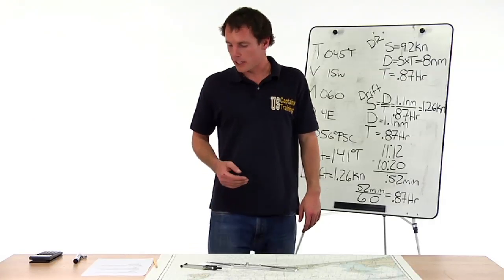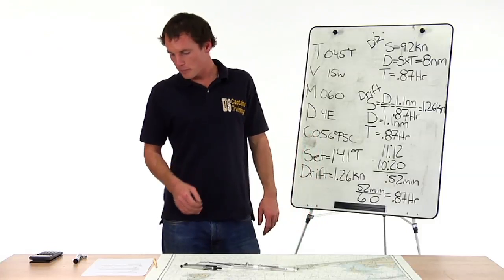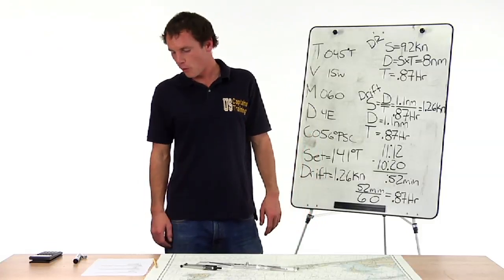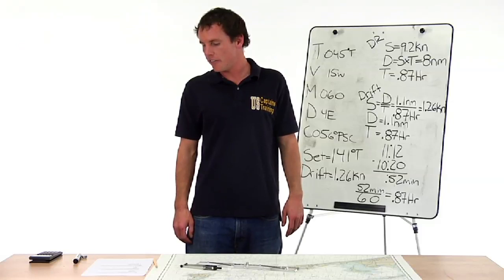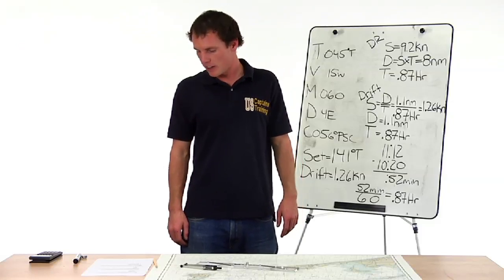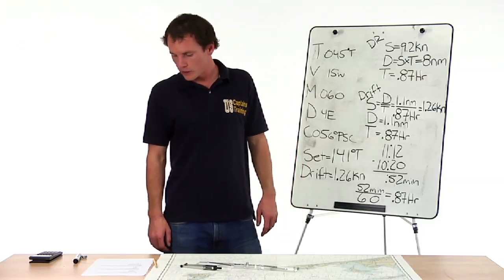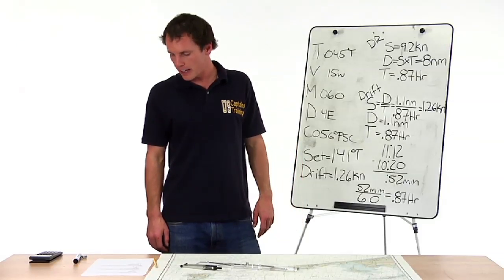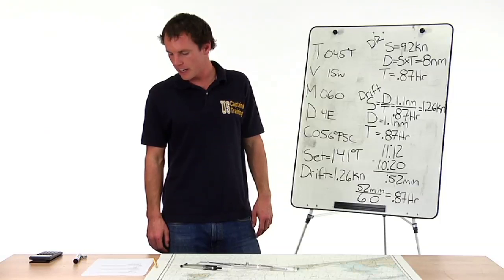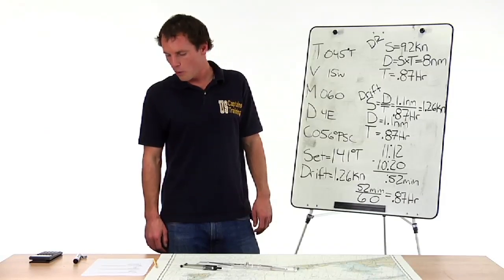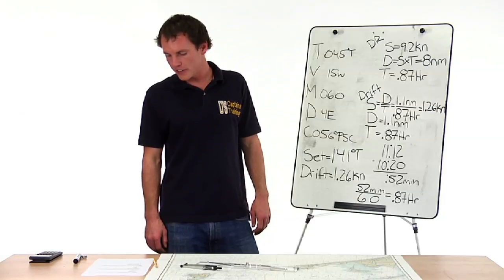The problem says at 1020, your position is 41°11' north, longitude 71°50' west. You're on course 56 per standard magnetic compass at 9.2 knots. At 1112, your position is 41°59' north, 71°41.7' west. What were the set and drift?